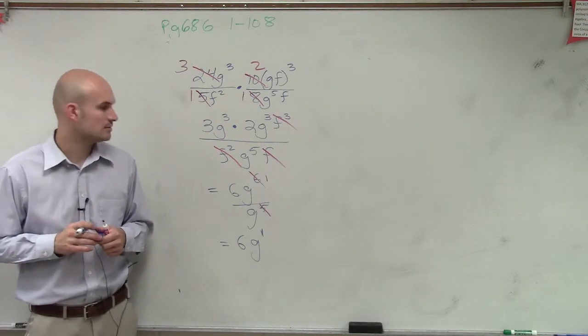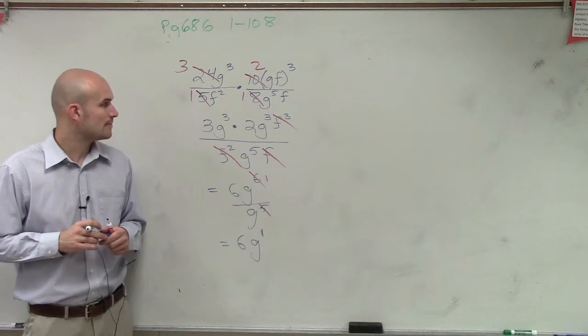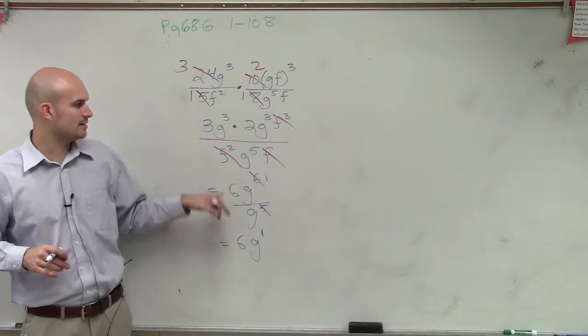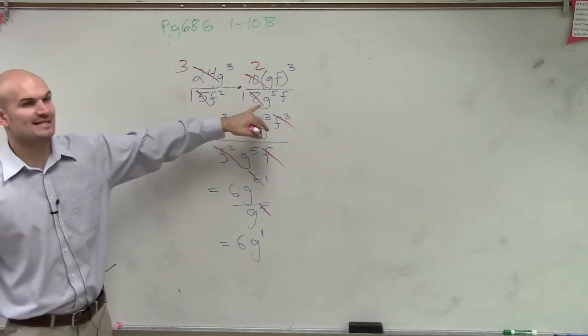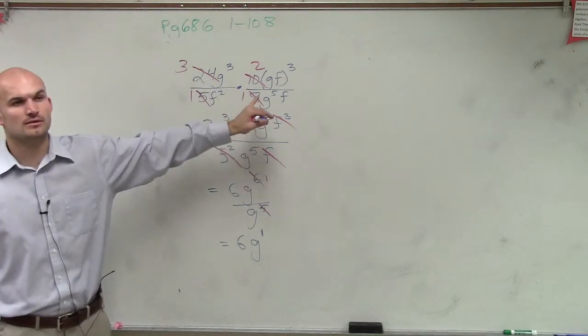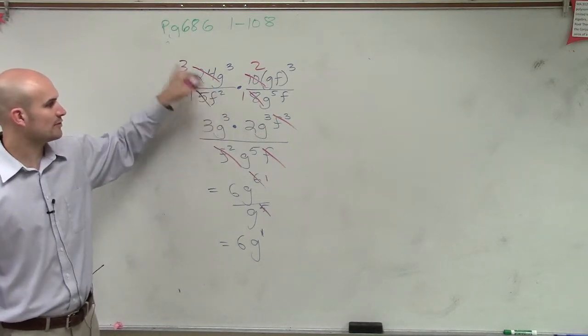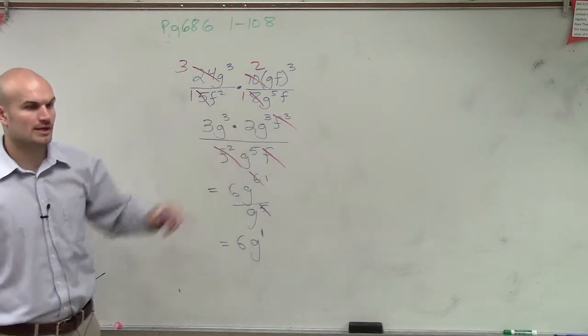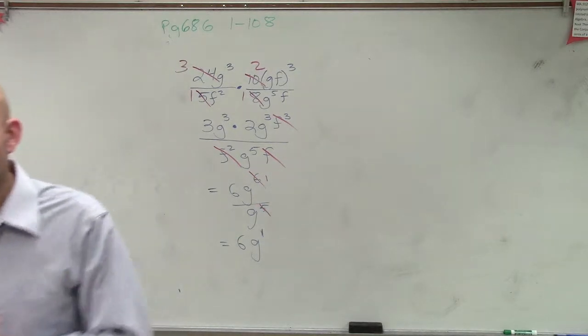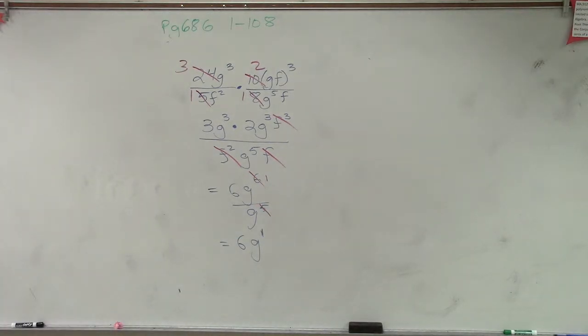What about the 2? From here to here? Yeah, because 24 over 8 reduces to 3 over 1. So the 24 goes to a 3, the 8 goes to a 1. All right, so I just reduced it. And you guys, you could multiply that all out and then reduce it if you wanted to.